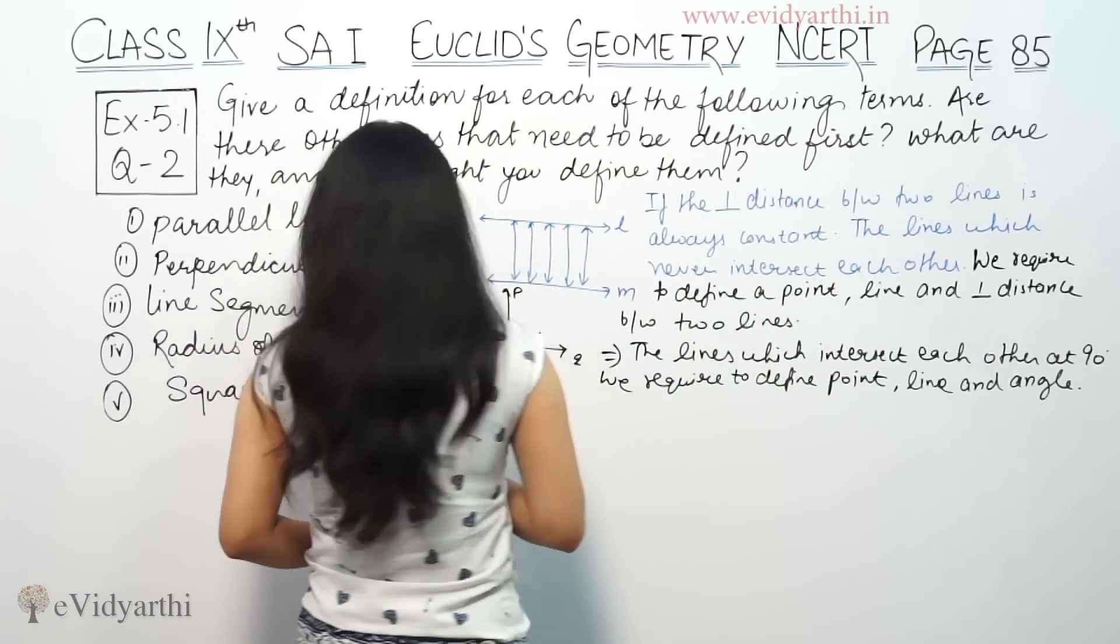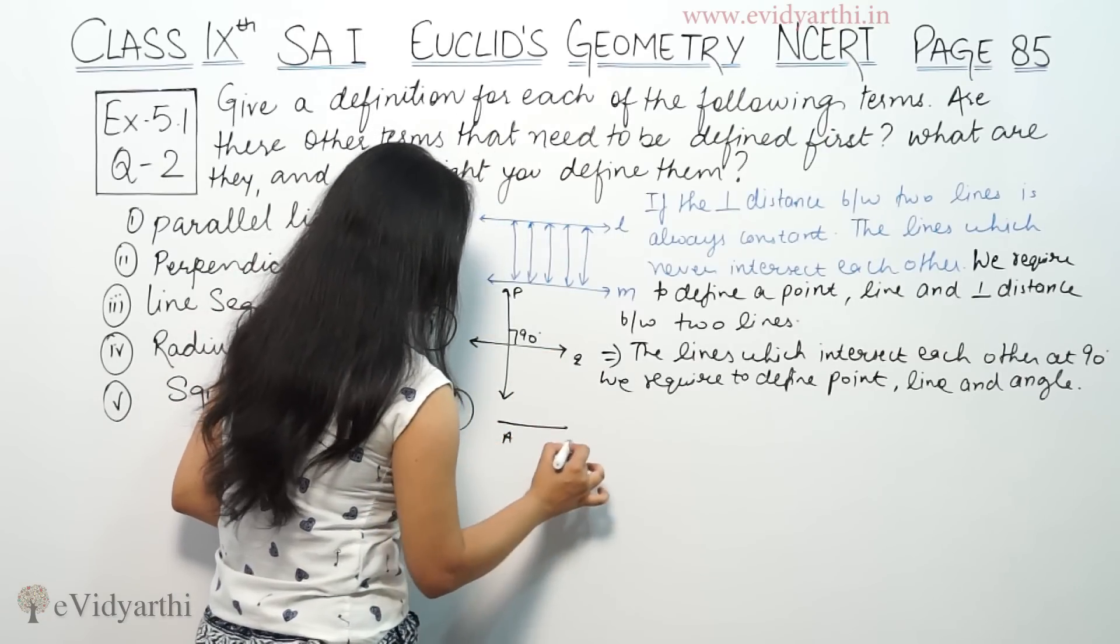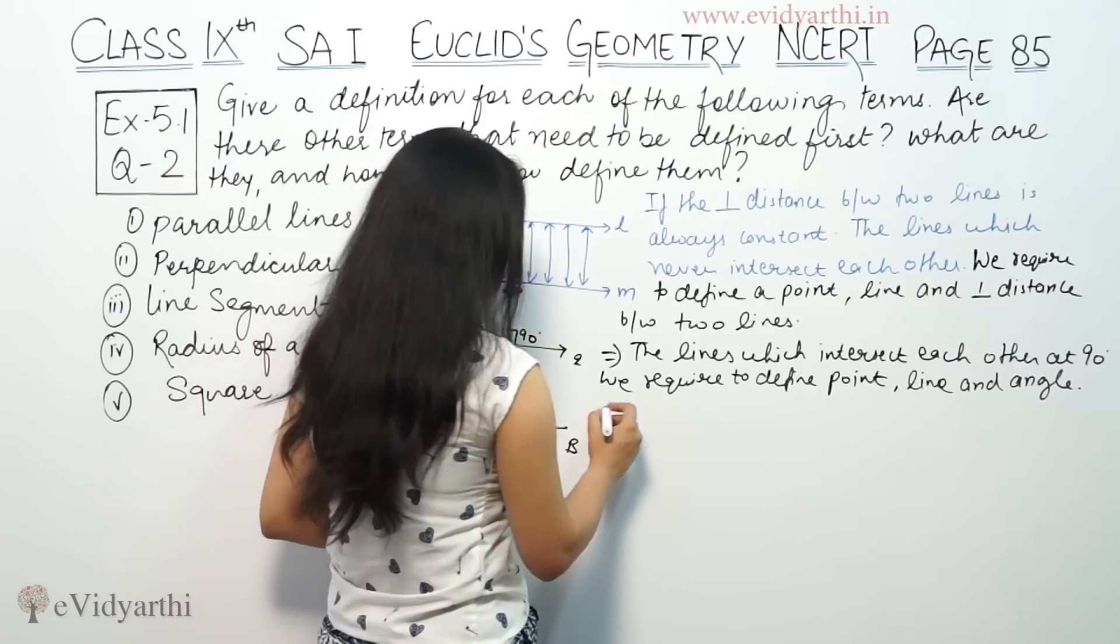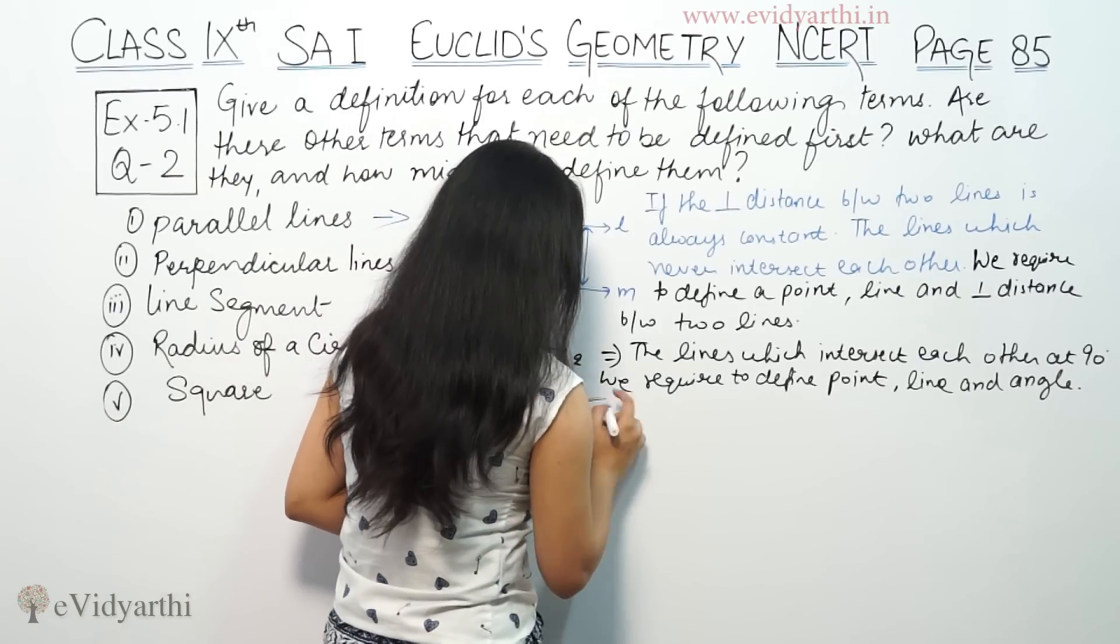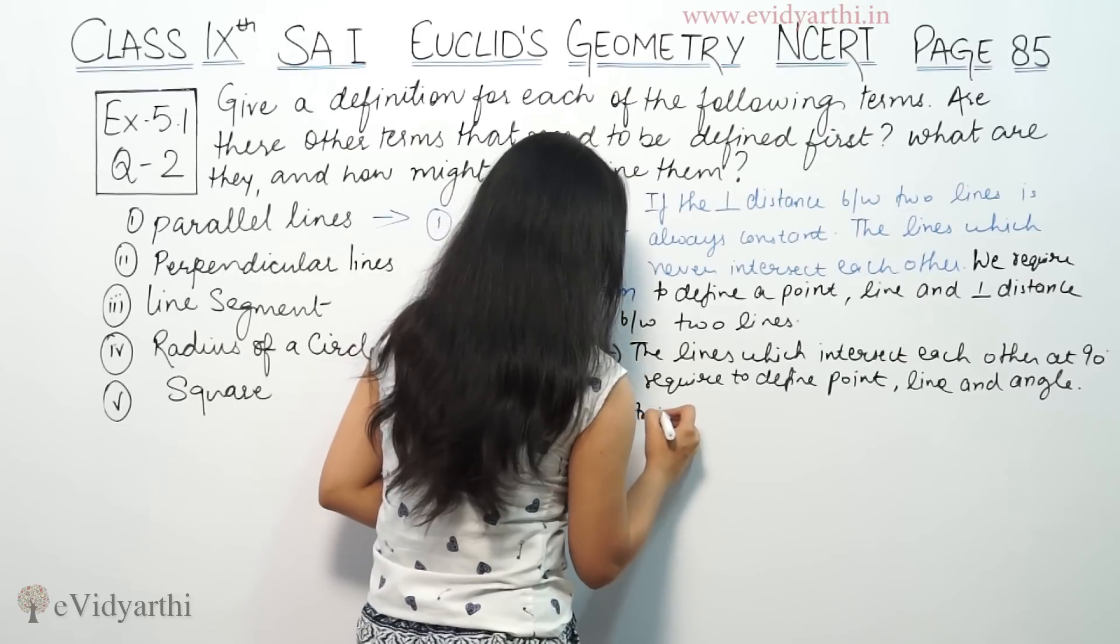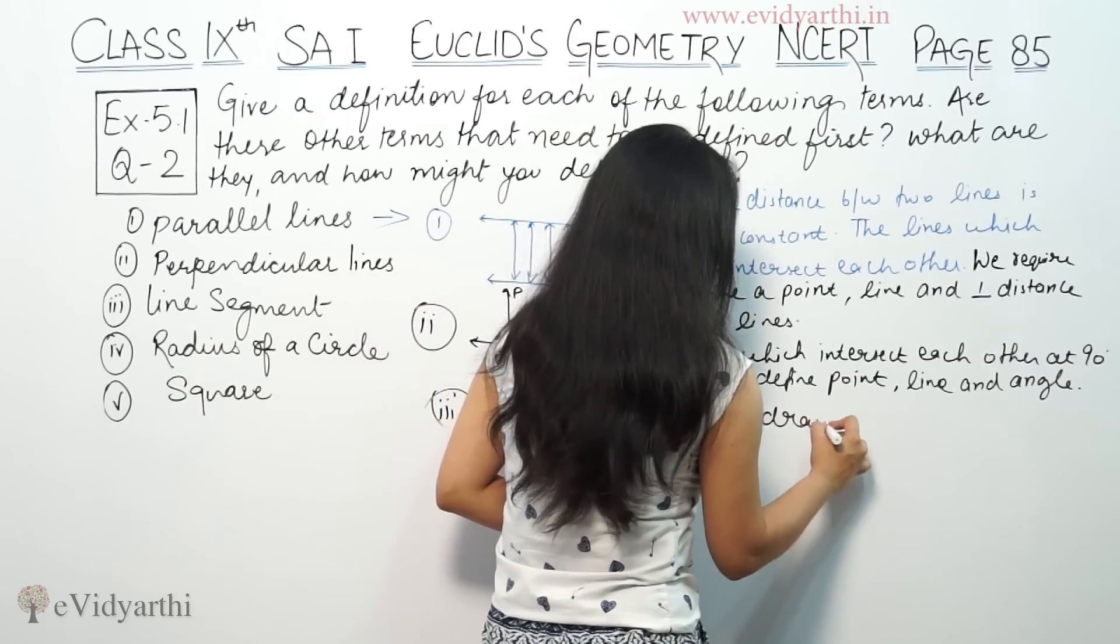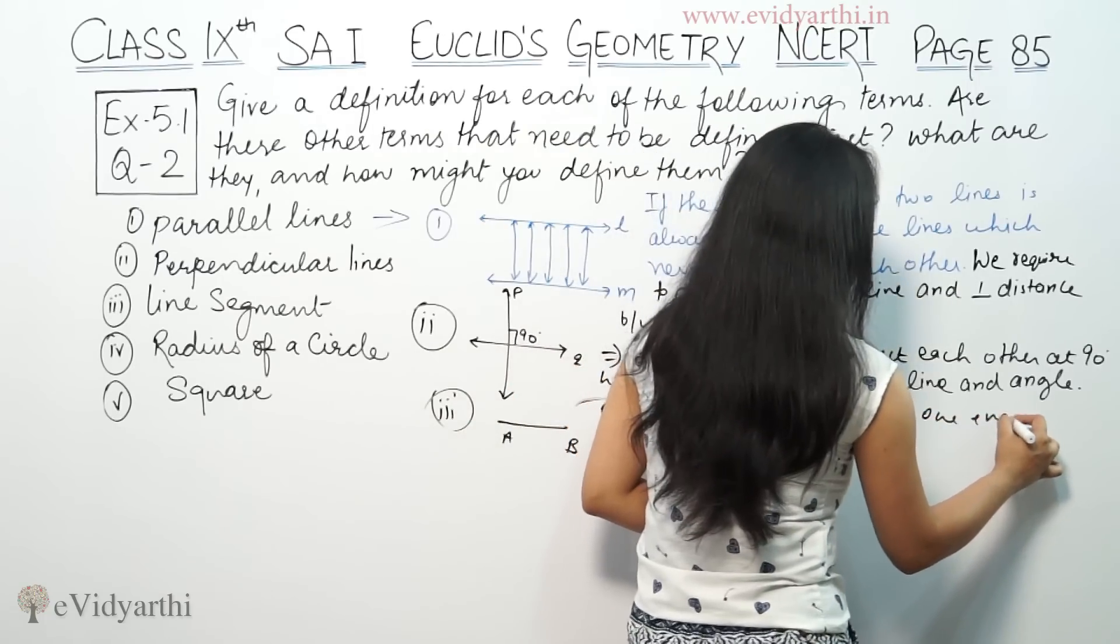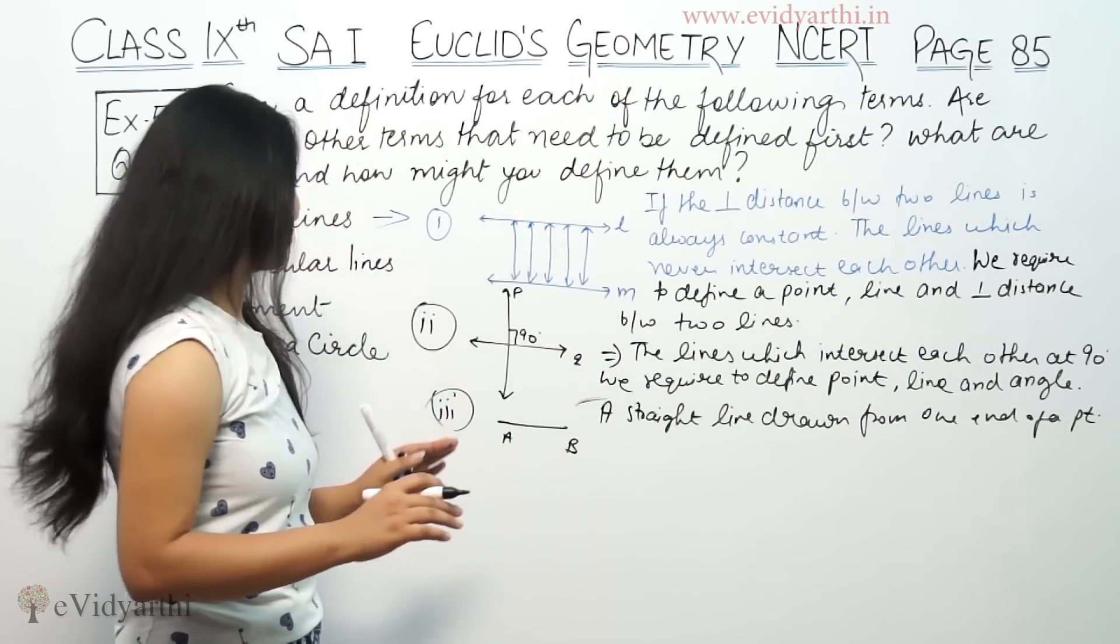What is line segment? Line segment is this thing. So a straight line drawn from one end of a point. This is third part. Straight line drawn from one end of a point, this is a line segment.